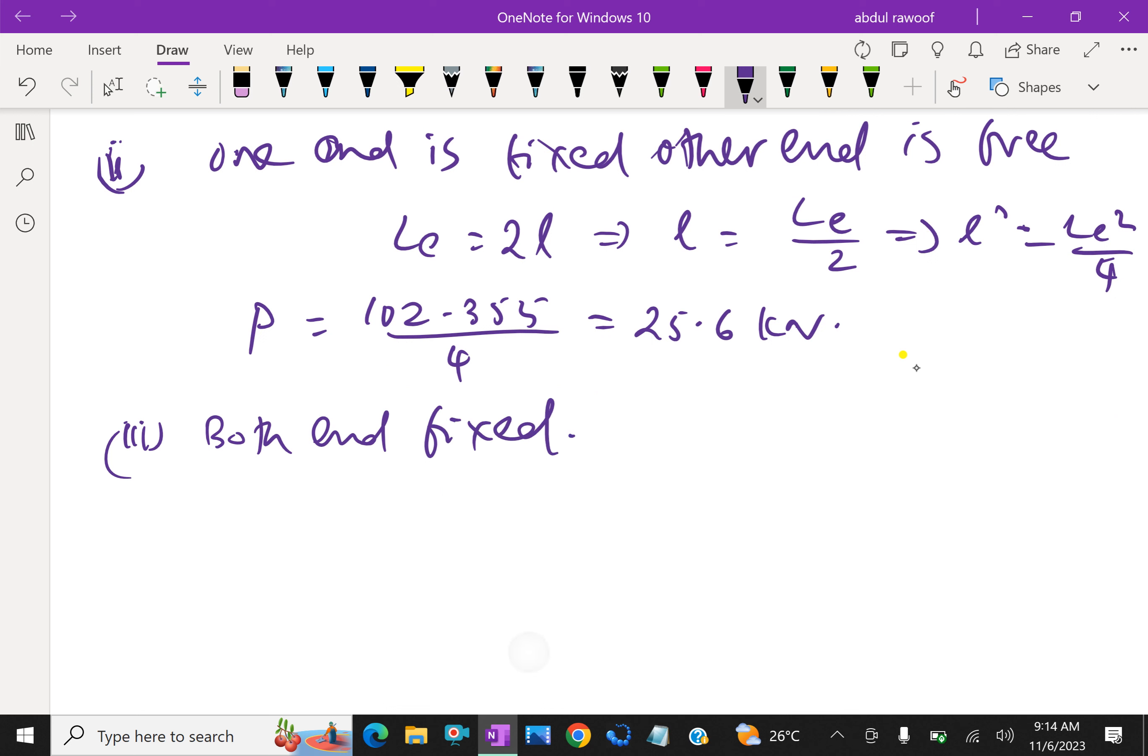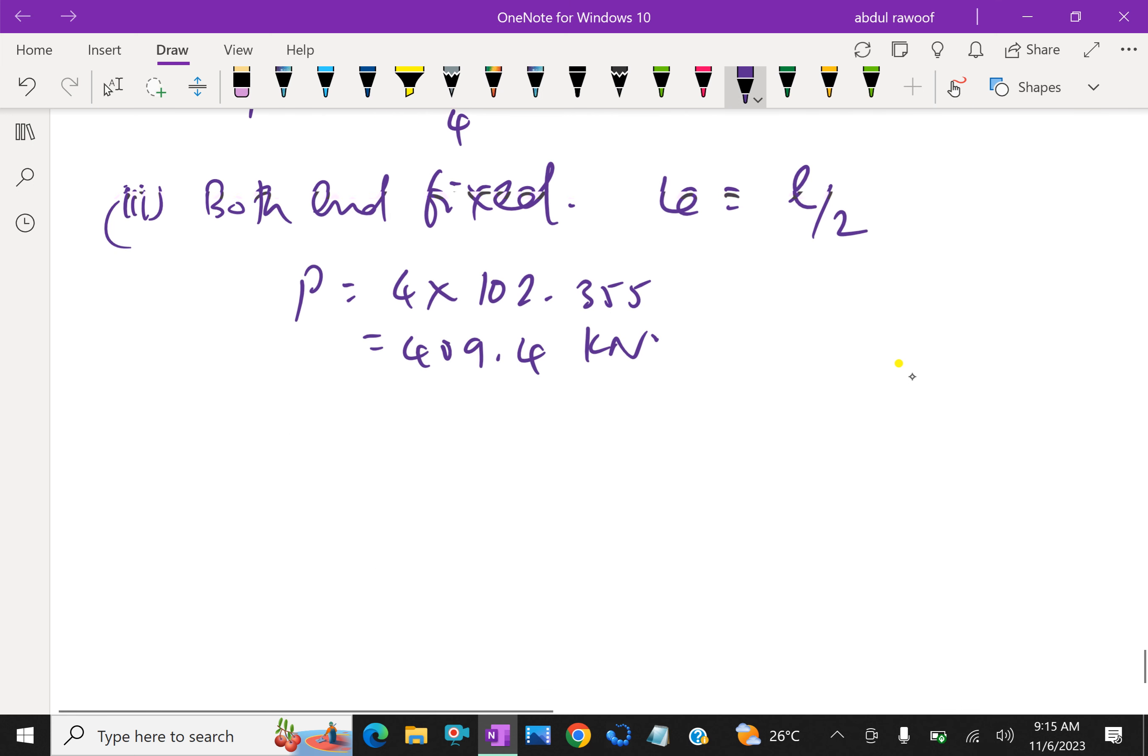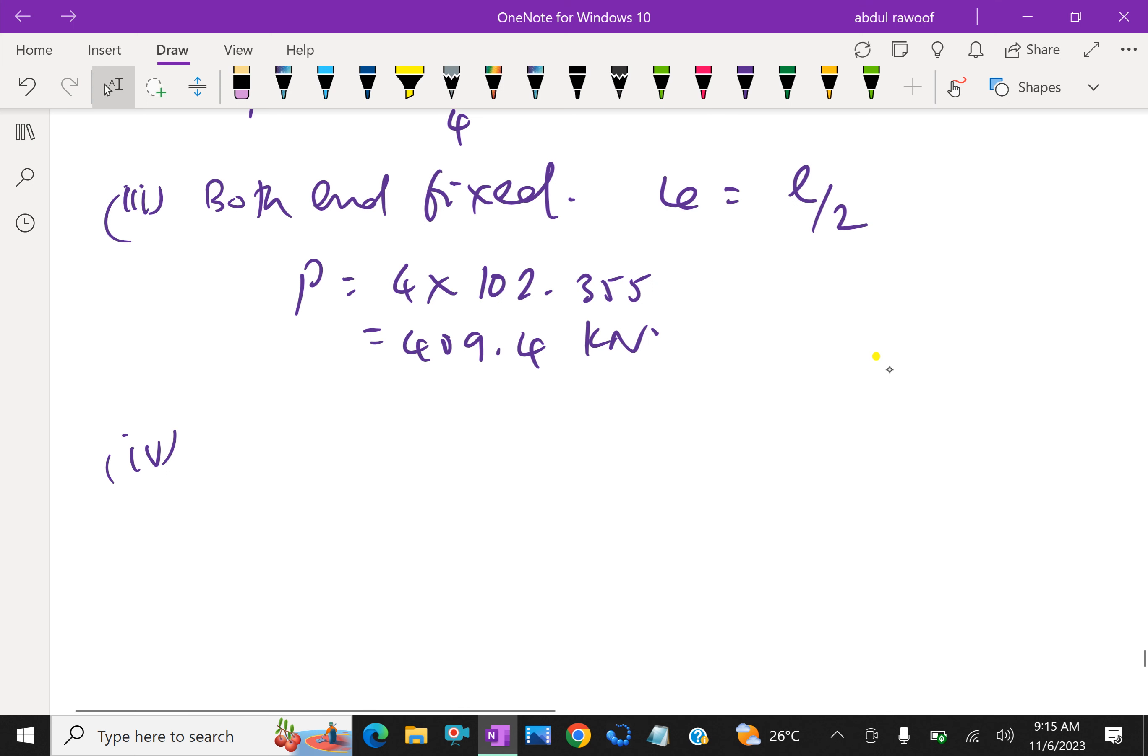Both end fixed. Both end fixed is L_e equal L by 2. For this, crippling load, L square by 2 means 4 comes as denominator, that 4 goes up. Then 4 times into 102.355, which is equal to 409.4 kN. This is for both end fixed.